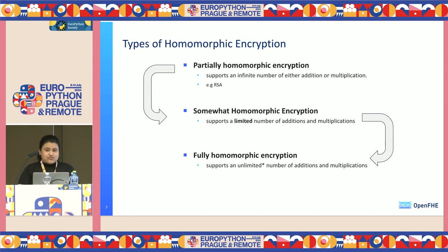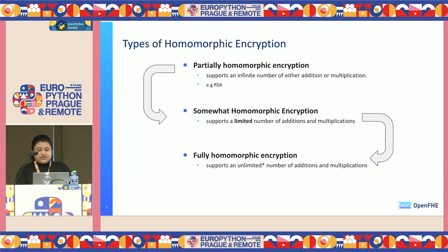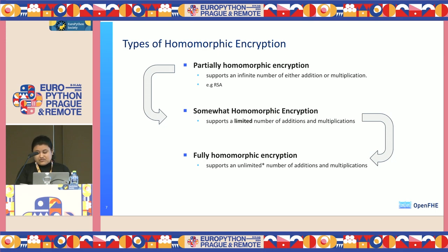There are different types of homomorphic encryption: partial homomorphic encryption supports an infinite number of either additions, subtractions, or multiplications. Somewhat homomorphic encryption supports a limited number of these calculations. And full homomorphic encryption is capable of supporting an unlimited number of these kinds of operations.